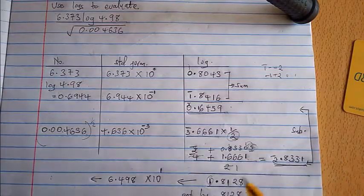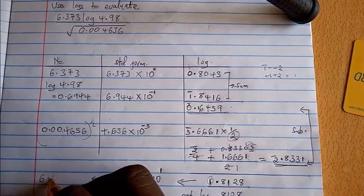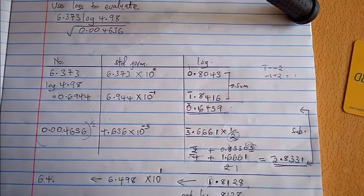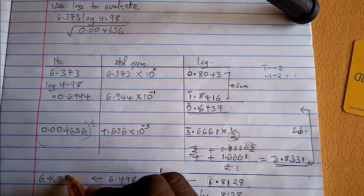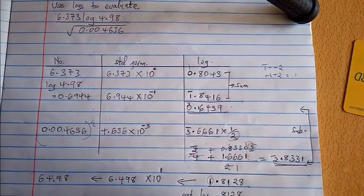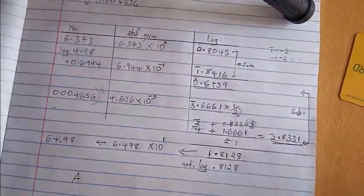From there now we convert it back to its number form and that should be 64.98. Therefore the final correct answer for this sum will be 64.98.